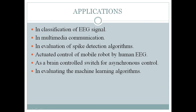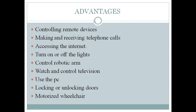The applications include classification of EEG signals in multimedia communication, evaluation of spike detection algorithms, actuated control of mobile output by human EEG as a brain control switch for asynchronous control, and evaluating machine learning algorithms.